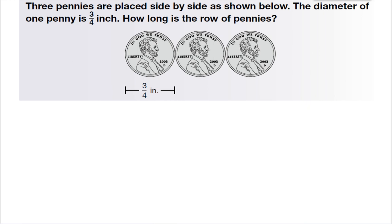This problem says three pennies are placed side by side as shown below. The diameter of one penny is three-fourths of an inch. How long is the row of pennies? I'm going to find this by taking three-fourths and multiplying it by the three pennies. To turn the number three into a fraction, I put it over the number one. Three times three is nine, four times one is four.